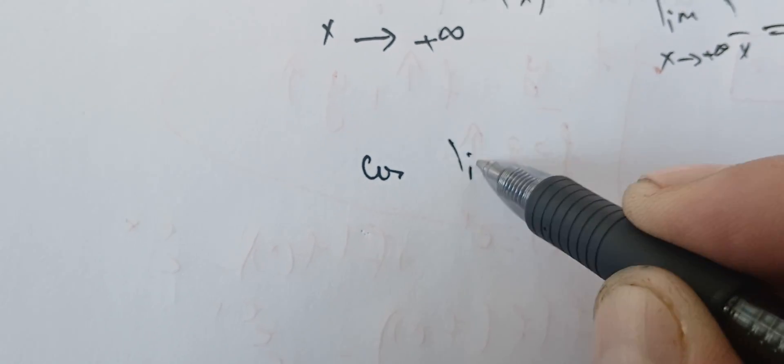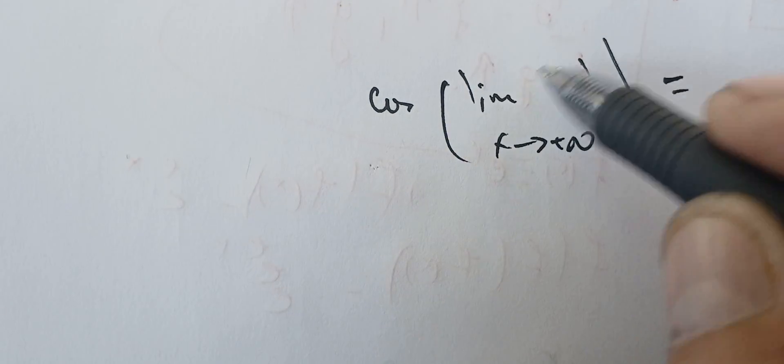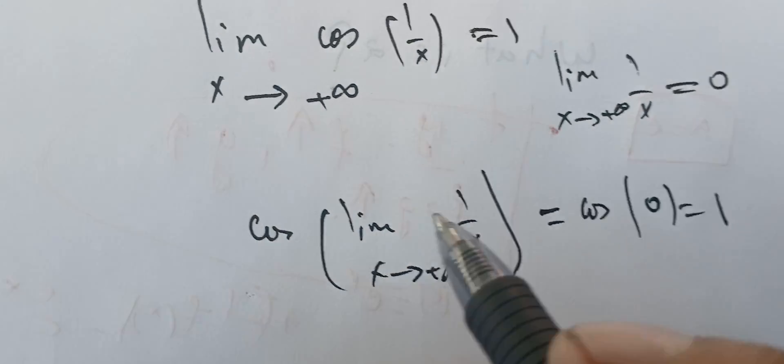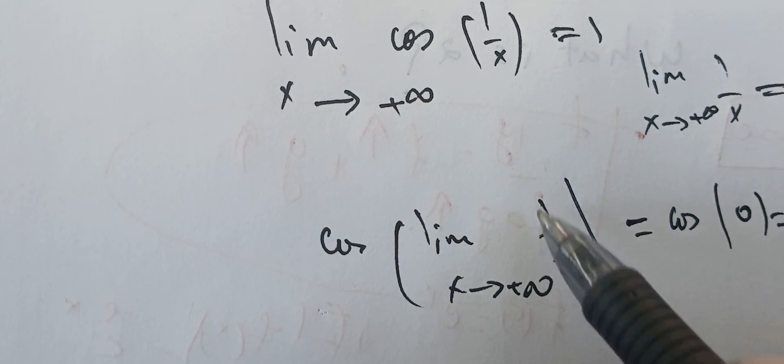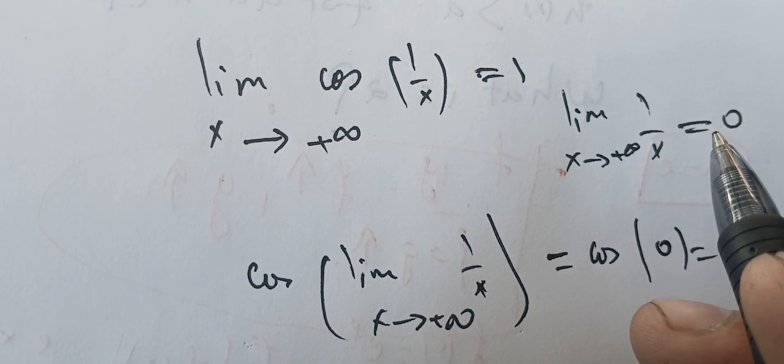Another way of writing this is that we can take the cosine of the limit of 1 over x as x goes to infinity. The limit here is 0, so the cosine of 0 is 1. We can do this because we know that cosine is continuous and this limit exists. So this is a quick way of finding this limit.